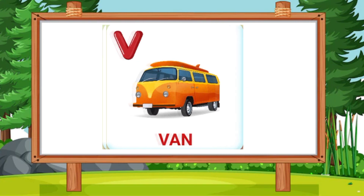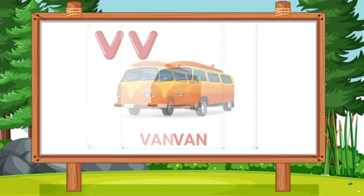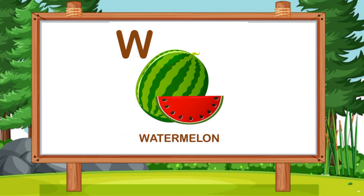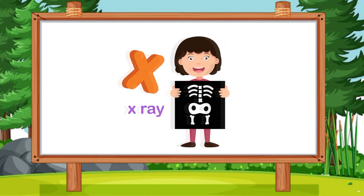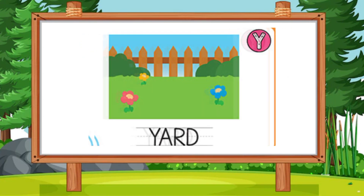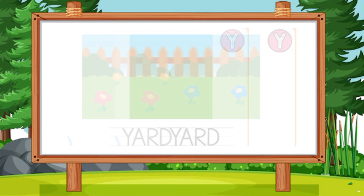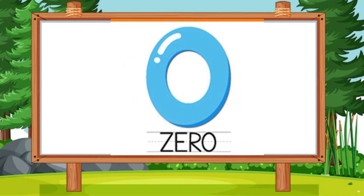V for Van, W for Watermelon, X for X-Ray, Y for Yarn, Z for Zebra. All right.